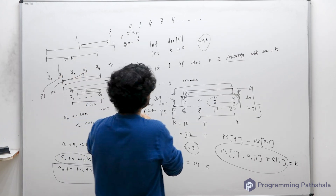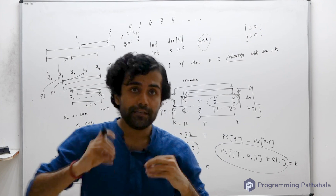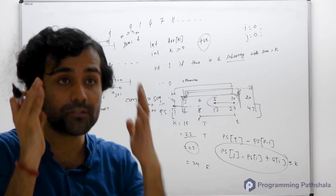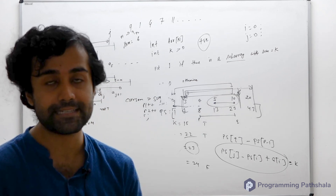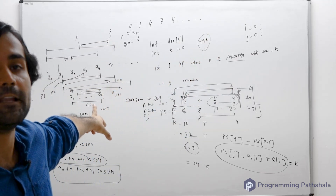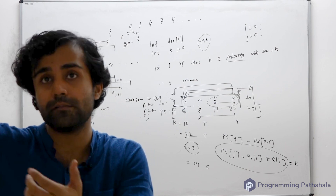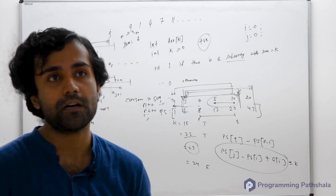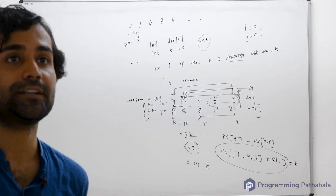Initialize i = 0, j = 0. In different questions the initialization of pointers will be different — it must come from logic and reasoning, not memorization. For the termination condition: since j is always ahead of or equal to i, the moment j reaches n, terminate the algorithm — you cannot find any subarray with the given sum.